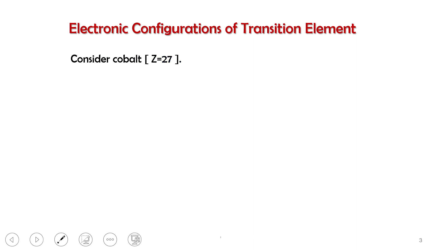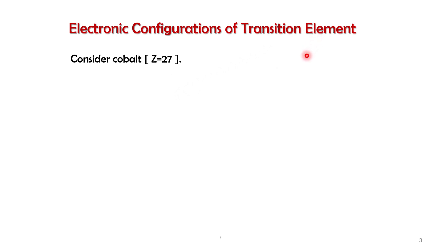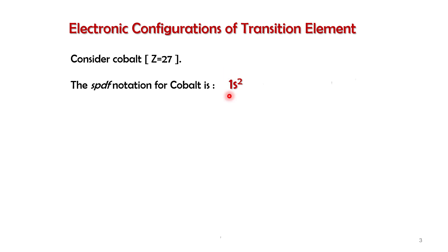In this video, we are going to learn how to write electronic configurations for transition elements. Transition elements include the d orbital. For example, cobalt with proton number 27 — we will write the spdf notation.